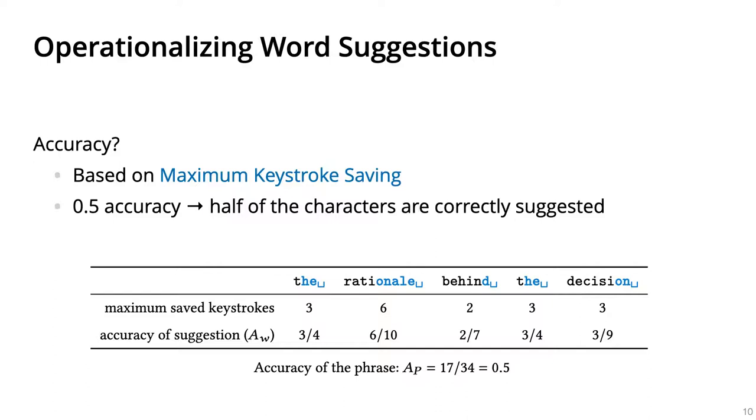I will not go into details, but our formalization of accuracy is based on maximum keystroke saving, which measures the proportion of keystrokes that were saved thanks to word suggestions. As an example, 0.5 accuracy means half of the characters are correctly suggested and thus can be saved.